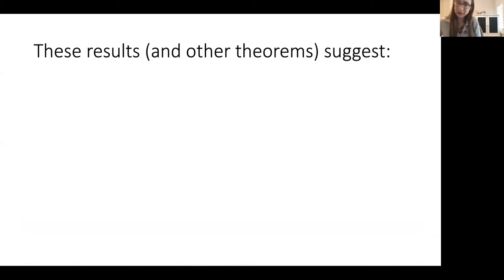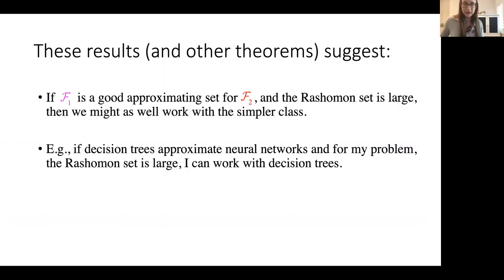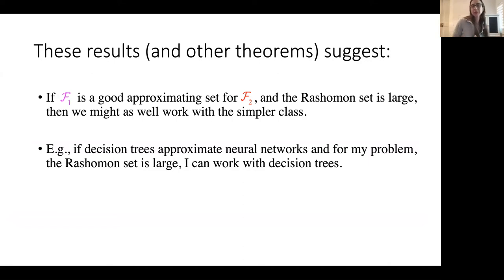These results suggest that as long as our simpler class is a good approximating set for the complicated class, and the Rashomon set is large, we might as well work with the simpler class. For instance, if decision trees approximate neural networks and the Rashomon set is large for my problem, then I don't need neural networks — I can just work with decision trees without losing accuracy.